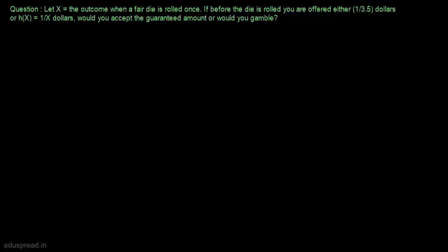We are given that x is the outcome when a fair die is rolled once. Let's note down the possible values of x and their corresponding probabilities. x can take 6 values: 1, 2, 3, 4, 5, and 6, and the corresponding probability values are 1/6 for all these values.